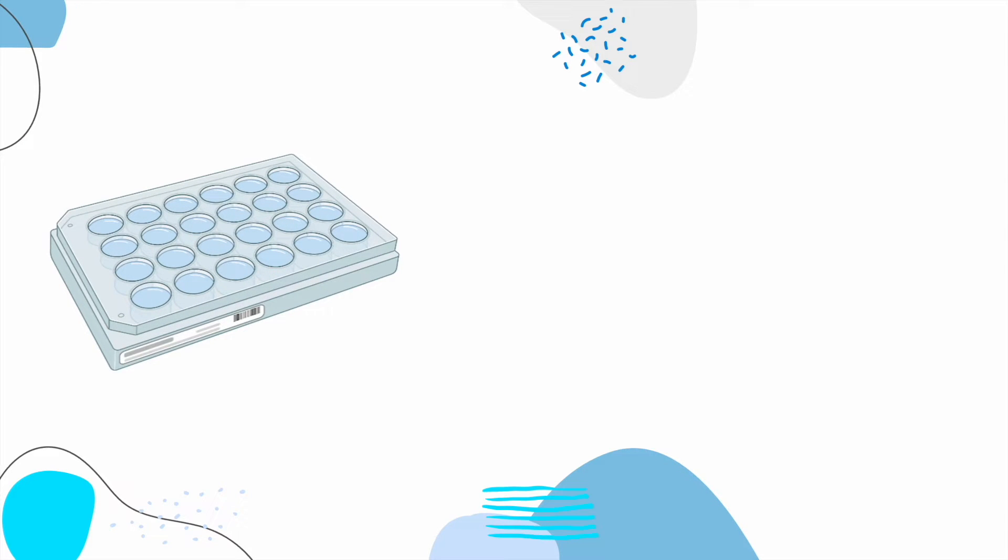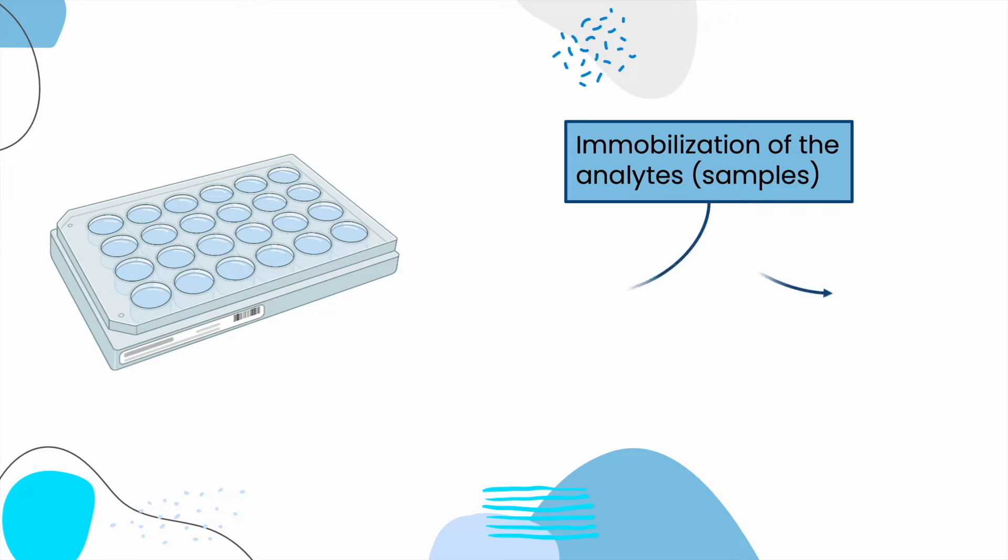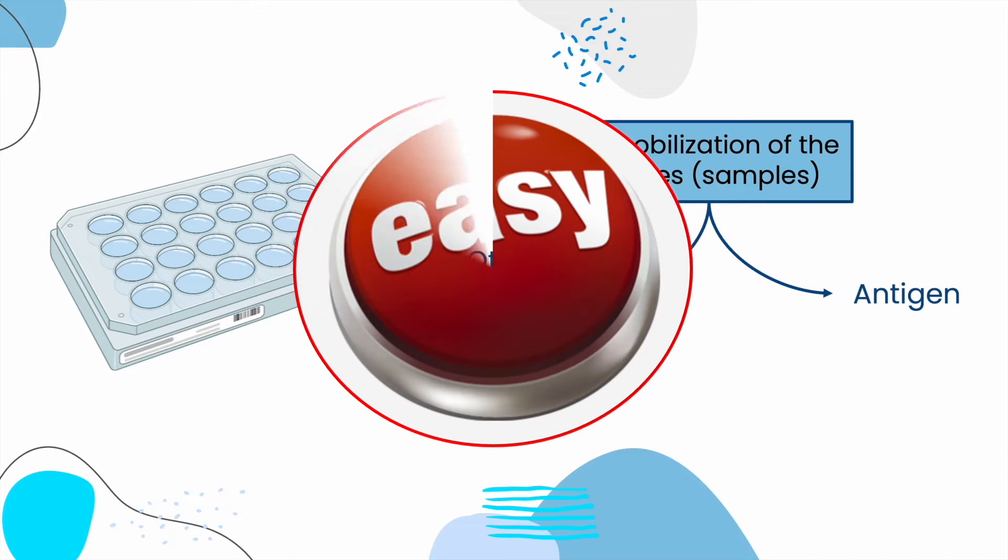An ELISA assay is typically performed in a multi-well plate, which provides the solid surface to immobilize the antigen. Immobilization of the analytes facilitates the separation of the antigen from the rest of the components in the sample. This characteristic makes ELISA one of the easiest assays to perform on multiple samples simultaneously.